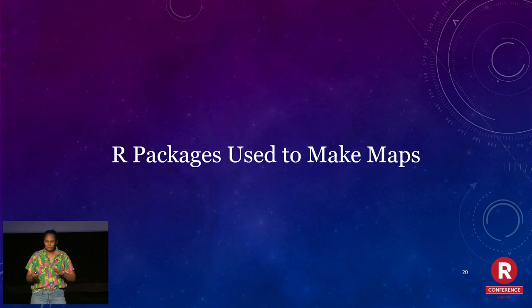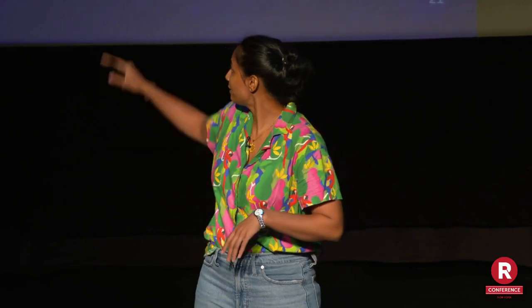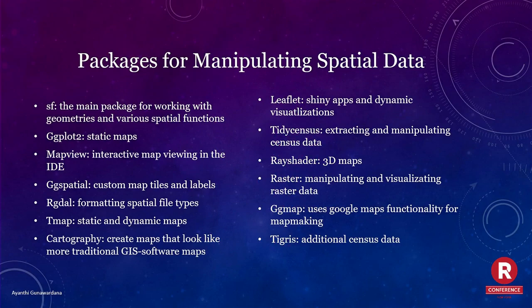I'm going to talk about some R packages used to make maps. For manipulating spatial data — this is an incomplete list — the ones I use the most are on the left. The main one to use is SF: that's the one you use to bring in data and manipulate it, doing spatial joins and various spatial functions. GGplot2 is great for static maps. Leaflet is the best for dynamic visualizations. There's a ton of documentation on all of them, especially SF.